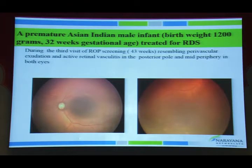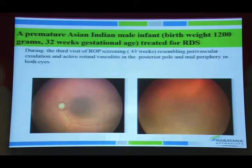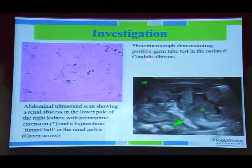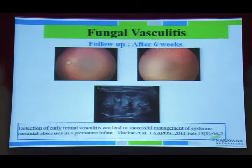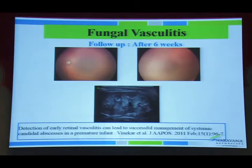In a child with perivascular sheathing in the mid-periphery who seemed otherwise fine, investigation showed urine microscopy positive for Candida albicans and ultrasound abdomen showed a perinephric abscess. Following treatment, there was resolution of both the vasculitis and the nephric abscess.